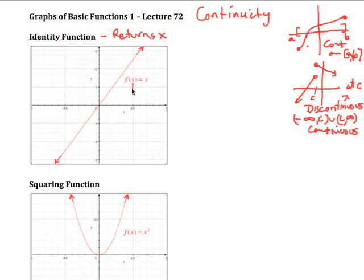The first function we're going to talk about is called the identity function — it just returns x. A function is a process: you apply that process to the x value to produce a y value, and in this case it just produces the same x value back. That's why we call it the identity function, and it has some uses when we start talking about functions in more detail.